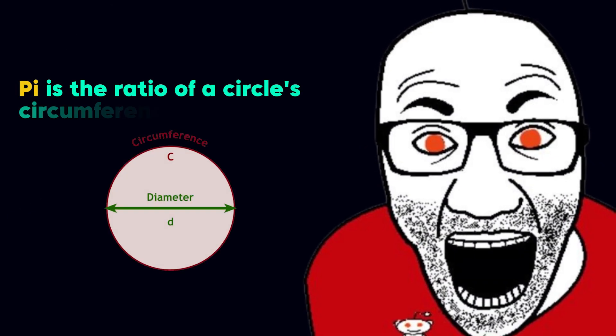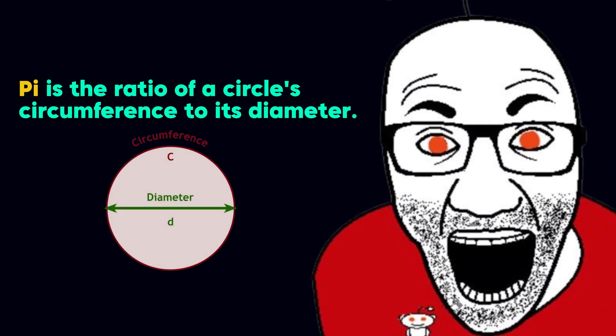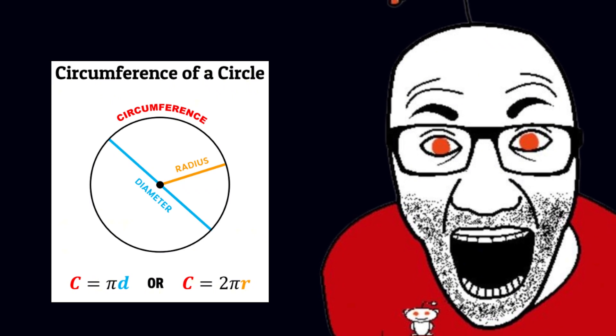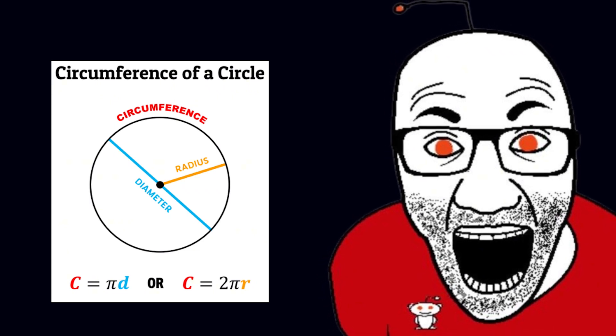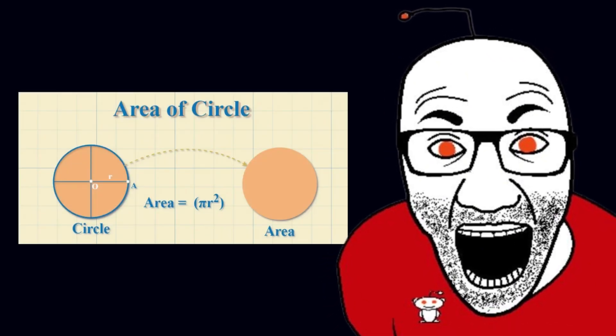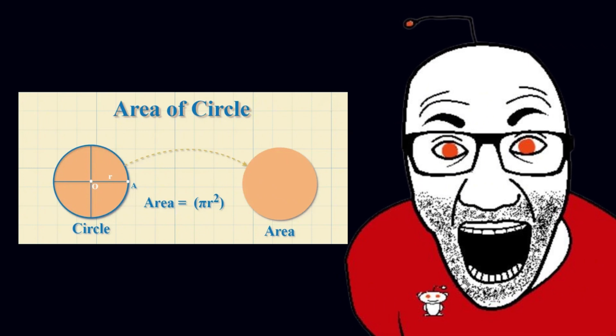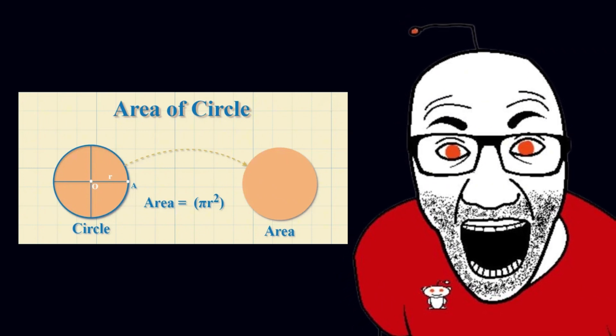Pi is the ratio of a circle's circumference to its diameter. So to get the circumference of a circle you just times pi by the diameter of the circle. And to get the area you times pi by radius squared. Interestingly pi has an infinite amount of decimal places.